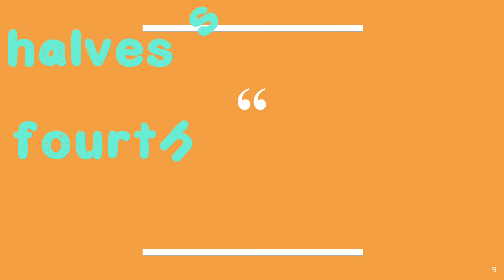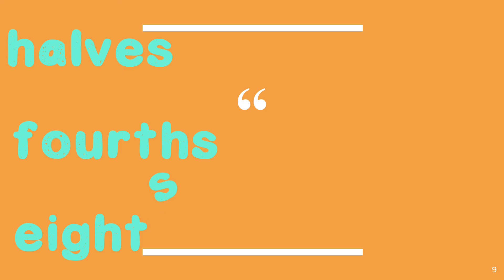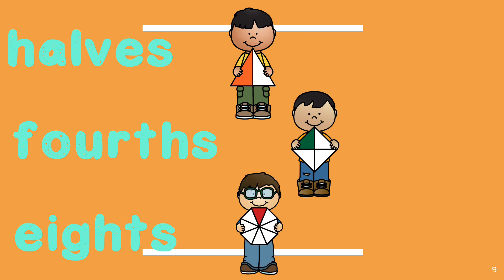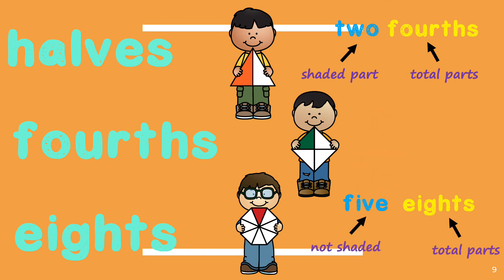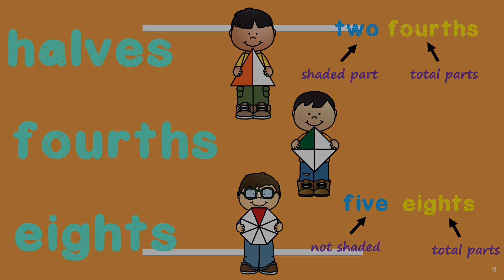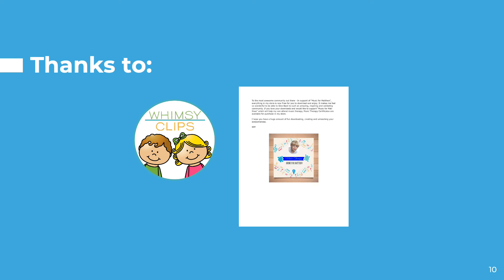Fractions are parts of a whole. Today we learned about halves, fourths, and eighths, and we learned how to write the fraction in word form. We learned that the words halves, fourths, and eighths represent the total parts in a fraction, and the number in front represents the shaded part. It is important to look carefully at what part of the fraction you will be asked about — the shaded or unshaded part. Thanks everyone for listening. Thank you.